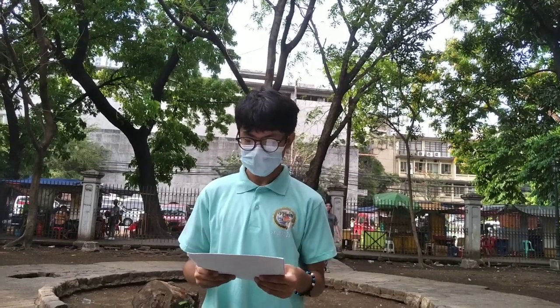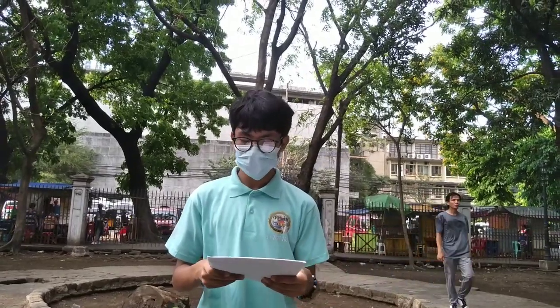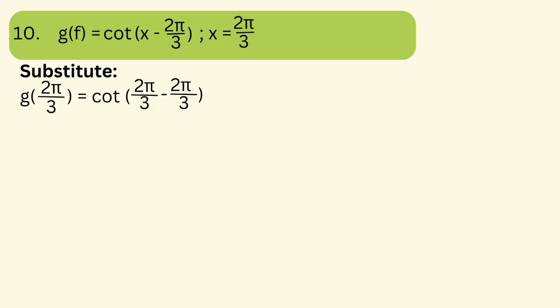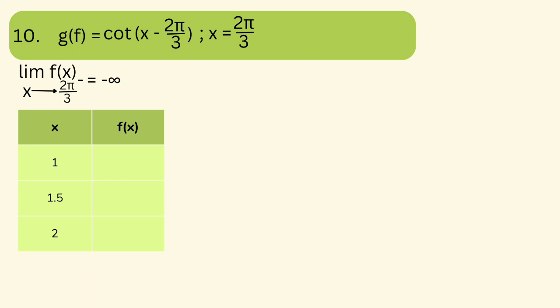For item number 10, g(x) = cot(x − 2π/3), if x = 2π/3. Substituting: g(2π/3) = cot(2π/3 − 2π/3) = cot(0), which equals 1/0 — undefined. The limit of f(x) approaches negative infinity as x approaches 2π/3 from the left, with x values 1, 1.5, and 2. For 1 we get −0.02; for 1.5 we get −0.01; for 2 we get −0.001.